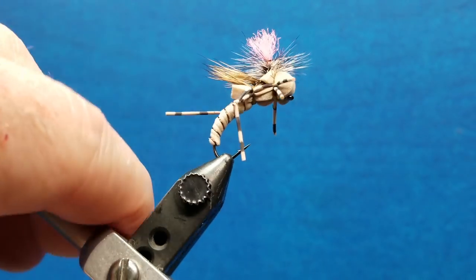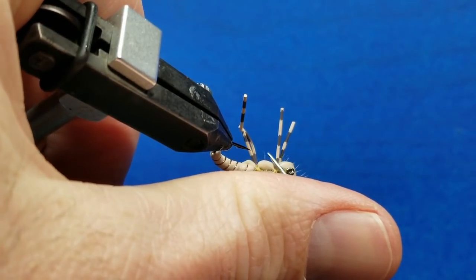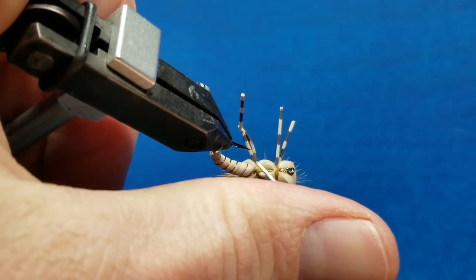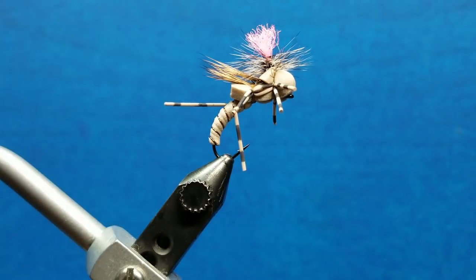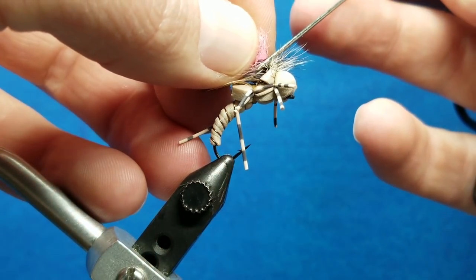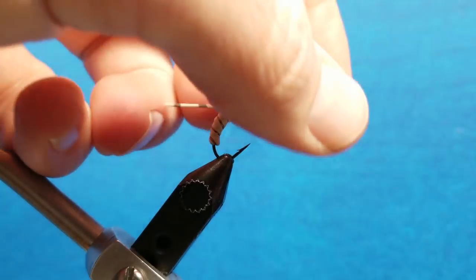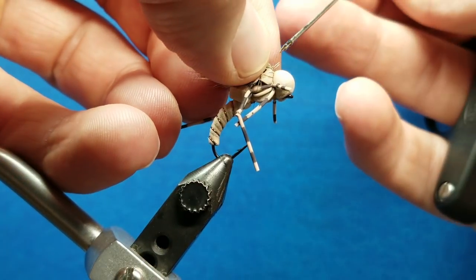And then I'm going to take a little bit of zap-a-gap. And I'm going to do a couple things here. I'm going to hit the thread on the bottom all the way across just to give it a little extra sheen and protection. And then any time you take any sort of parachute pattern, you should always go in and hit a little bit of drop right at the top of the post so that it doesn't unravel. And I also like to put a quick little drop right at the base of the post.